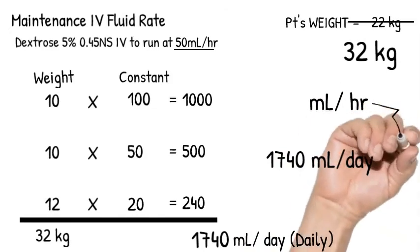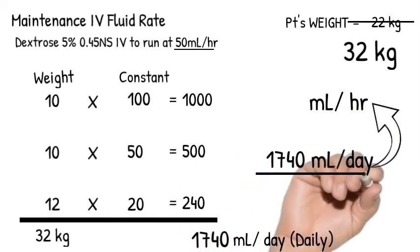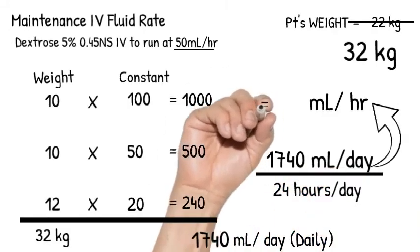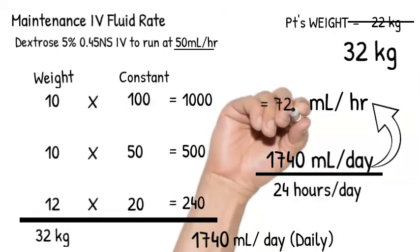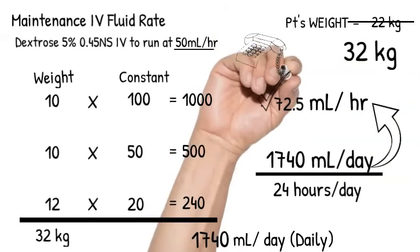So how do you go from here to here? We will divide 1740 mls by 24 hours in a day. So the answer is 72.5 mls per hour. What do we do if the doctor orders 50 mls per hour? Can we calculate this? We will call the doctor to clarify.